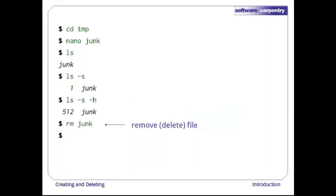Let's tidy up by running 'rm junk'. rm stands for remove. This command deletes files. It's important to remember that there is no undelete — Unix doesn't move things to a trash bin. It unhooks them from the file system so that their storage space on disk can be recycled. Tools for finding and recovering deleted files do exist, but there's no guarantee they'll work, since the computer may reclaim the file's disk space right away.